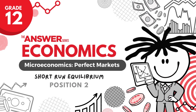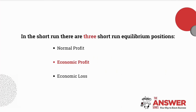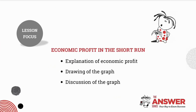Hello Matrix, and welcome to our series of videos on the perfect market. There are three different equilibrium positions in the short run: economic profit, normal profit, and economic loss. In our previous lesson we examined the normal profit position, and in today's lesson we will focus specifically on economic profit in the short run, with an emphasis on an explanation of the economic profit, the drawing of the graph, and a discussion thereof.